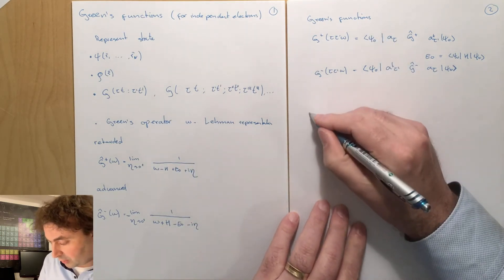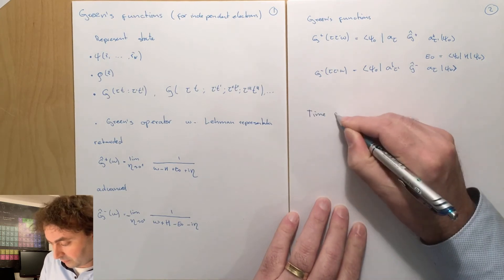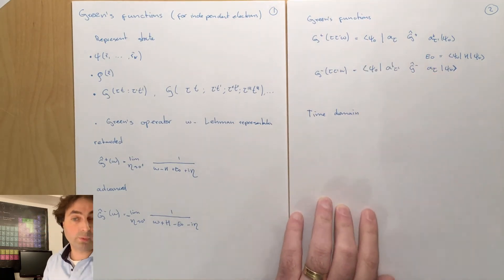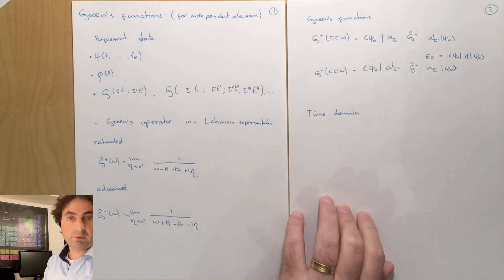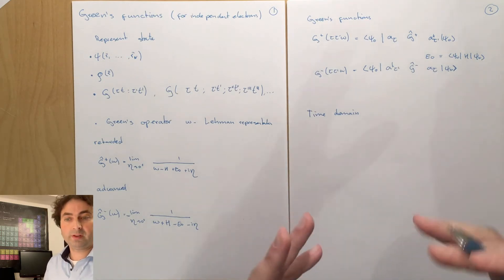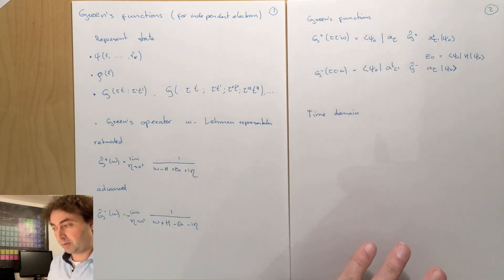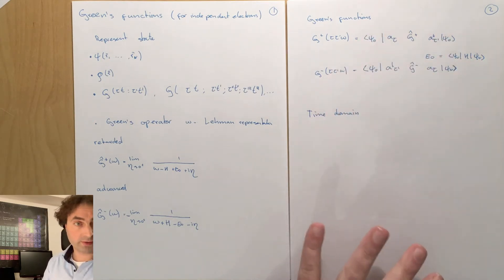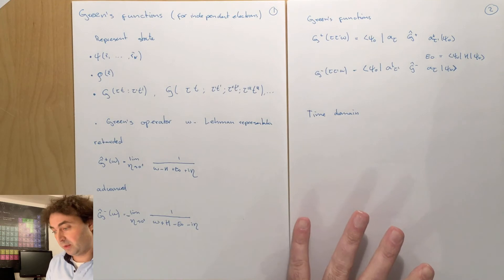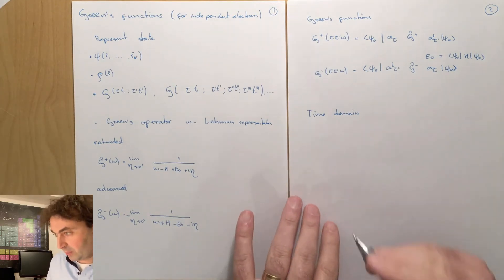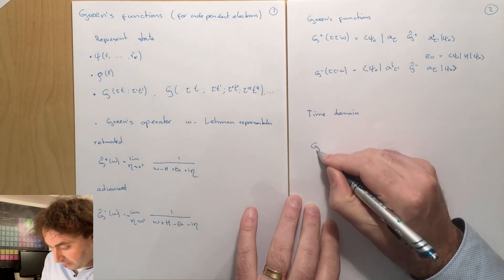We can also look at the Green's functions in the time domain, which can be obtained from the frequency domain by Fourier transform. We will do this in a later lecture, but I want to show you the Green's function and its definition in the time domain, and show you that it is self-consistent with the Fourier transform later.